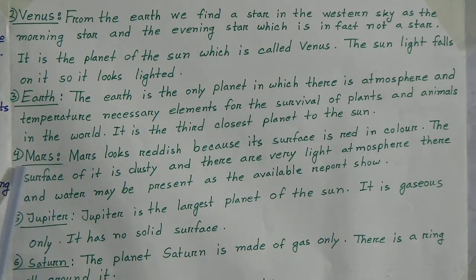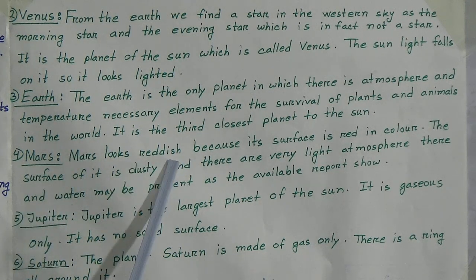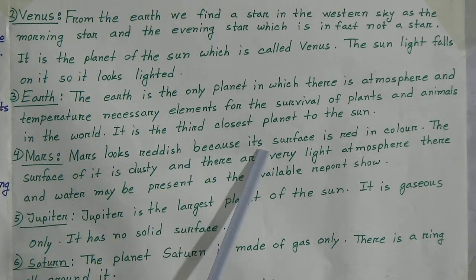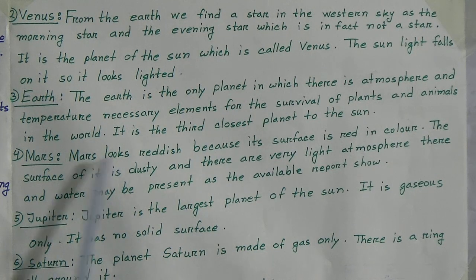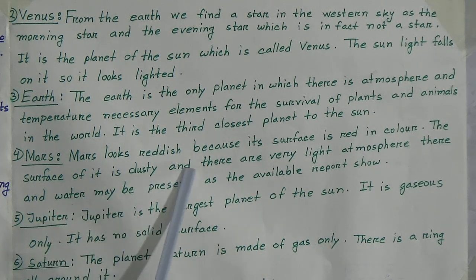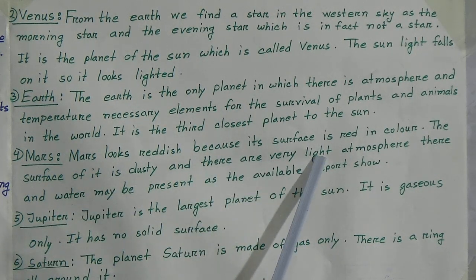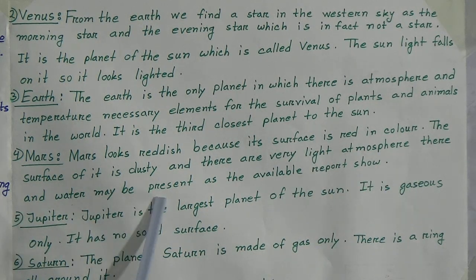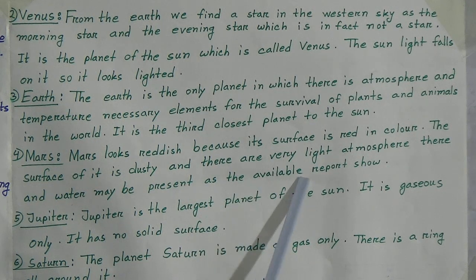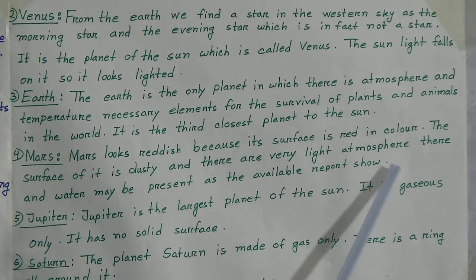Number 4: Mars. Mars looks reddish because its surface is red in colour. The surface is dusty and there is a very light atmosphere. Water may be present there, as available reports show.